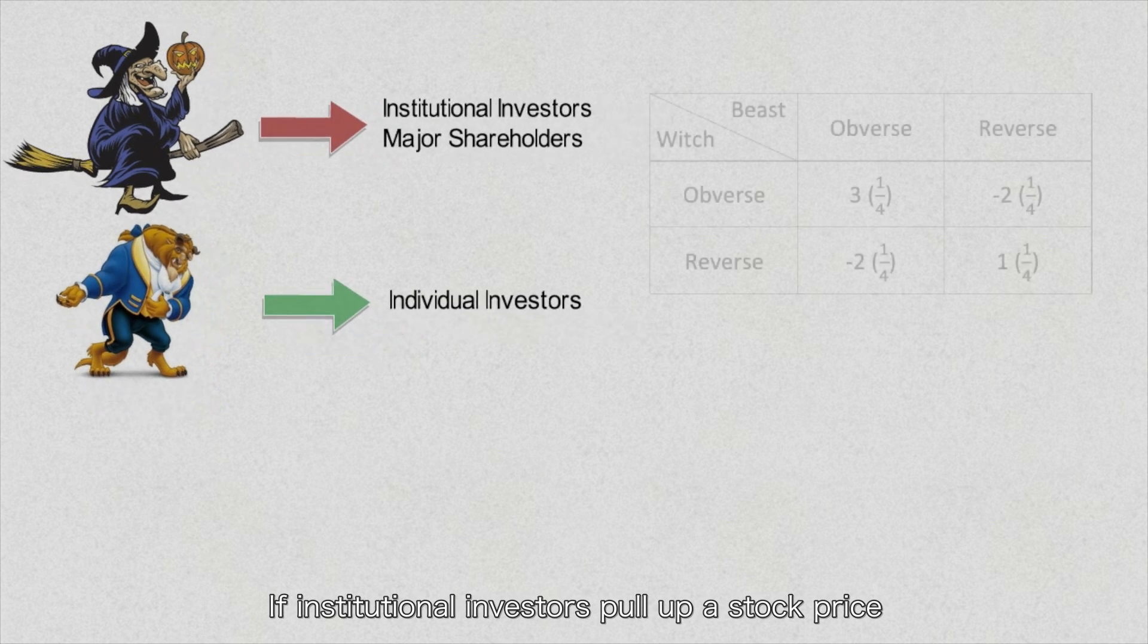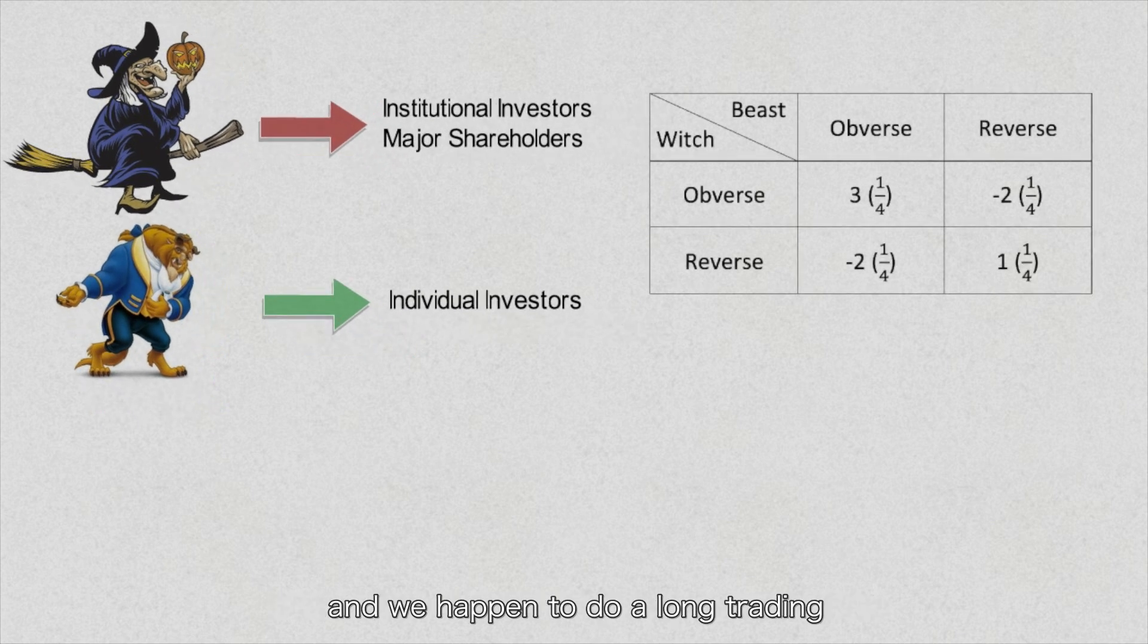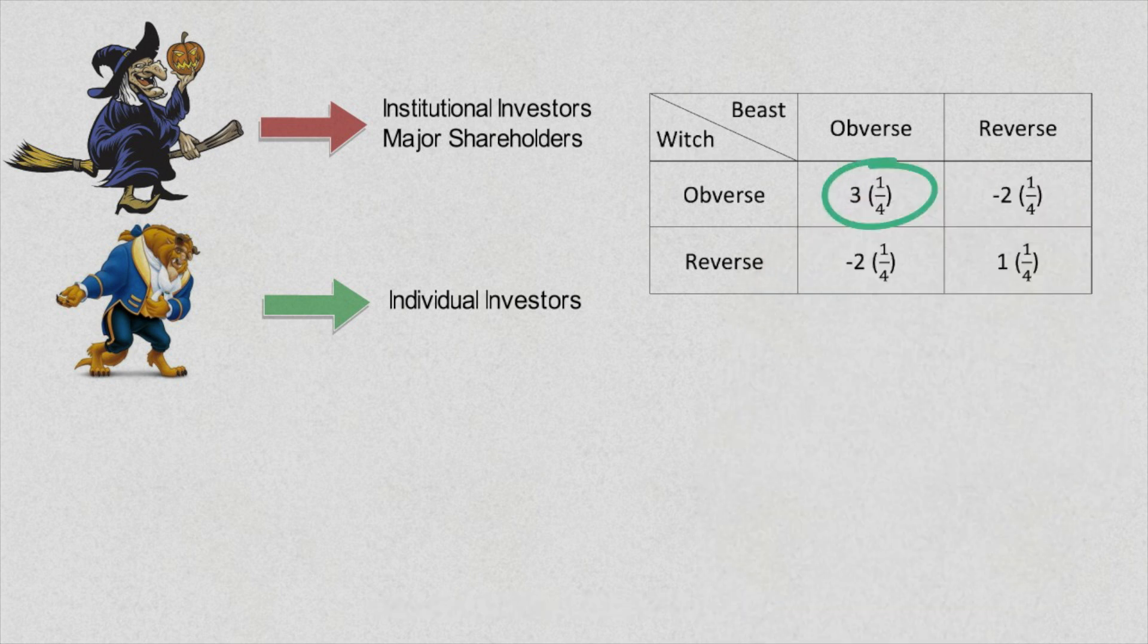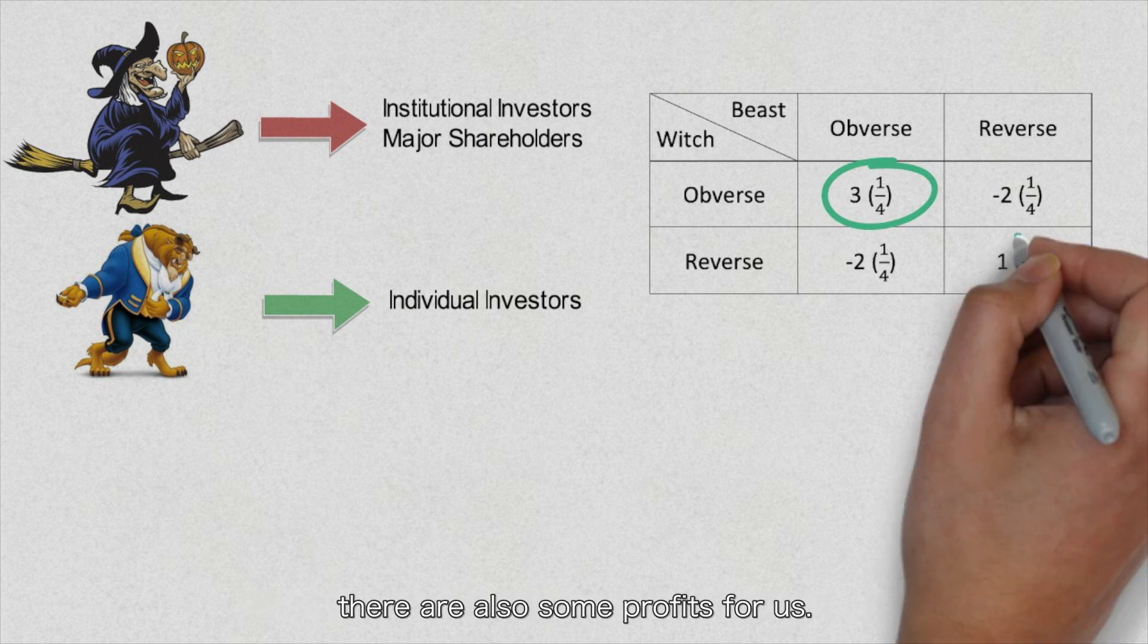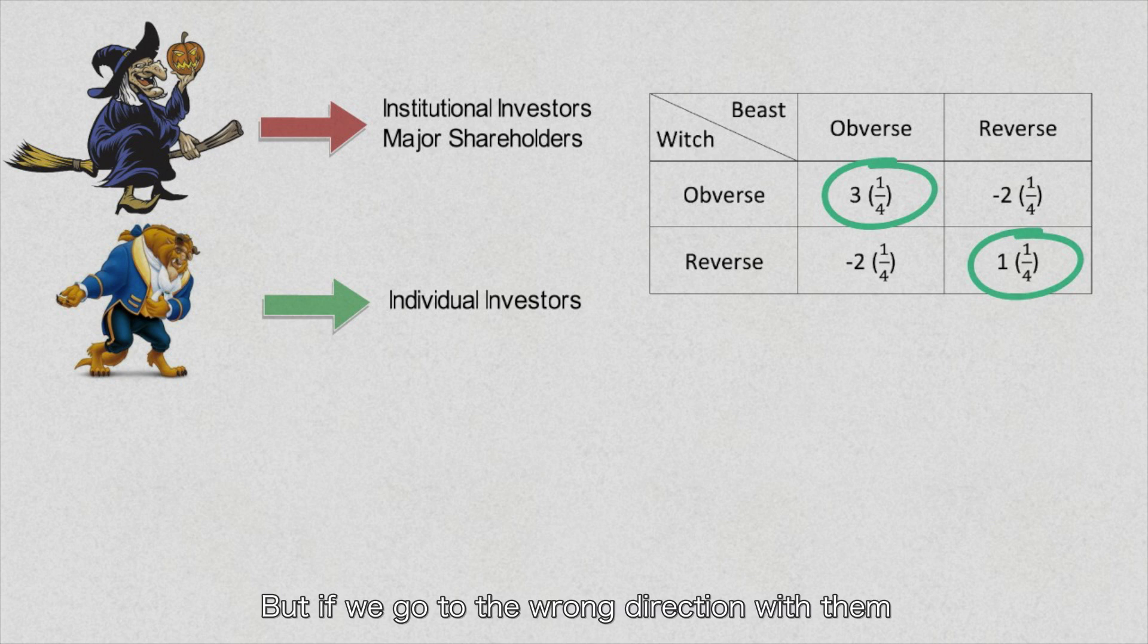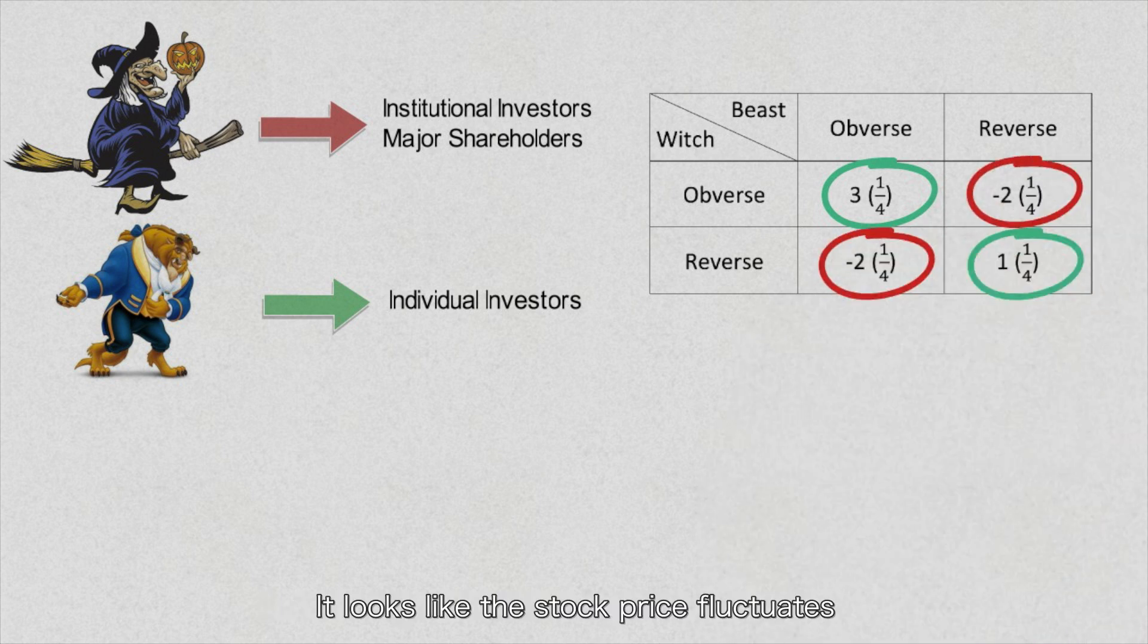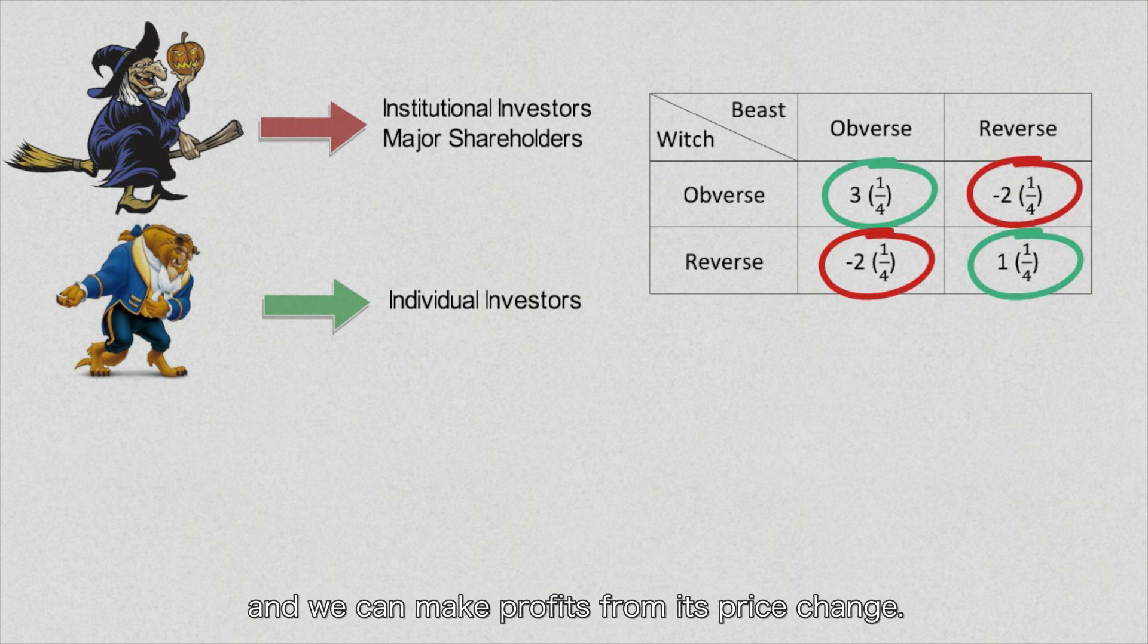If institutional investors pull up a stock price and we happen to do a long trade, we can make a lot of income. If institutional investors push down a stock price and we are doing a short trade, there is also some profit for us. But if we go in the wrong direction with them, we can lose money.